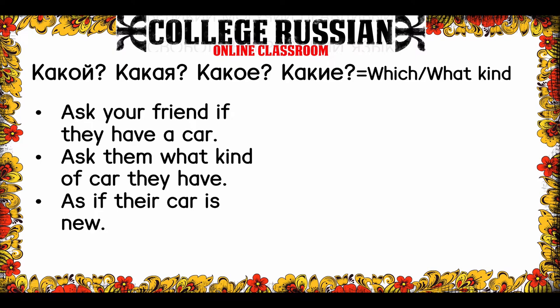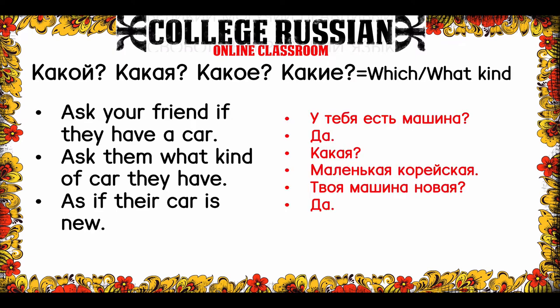Imagine a little dialogue using what we've learned. How would you ask your friend if they have a car? Remember, to ask somebody if they have something, you need to use correct intonation. Then they say they do, and you say 'Oh really? What kind?' and then you ask if their car is new. The big thing here is you need to know the word for car and what gender it is — that determines all the other words you use. У тебя есть машина? Да. Какая? Маленькая корейская. Твоя машина новая? Да. Notice all these adjectives — какая is feminine because машина is feminine. Маленькая корейская — a little Korean car — those are all feminine. And новая is also feminine, and твоя is also feminine.